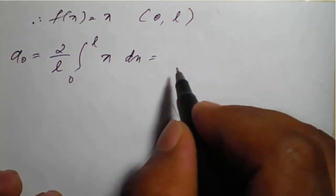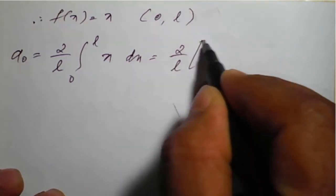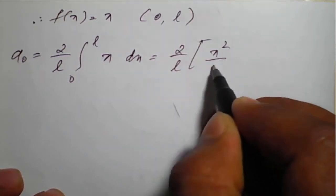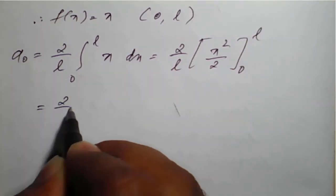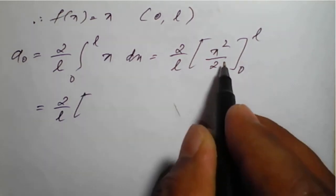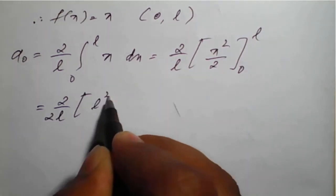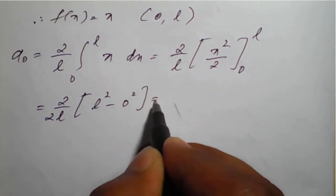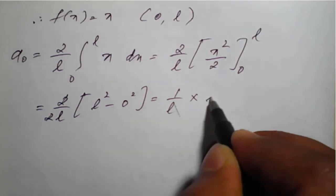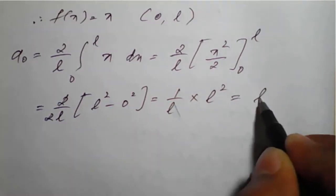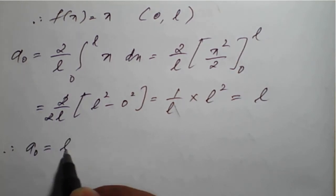On integration, a₀ = (2/l) · [x²/2] from 0 to l = (2/l) · (l²/2 - 0) = (1/l) · l² = l. Therefore a₀ = l.